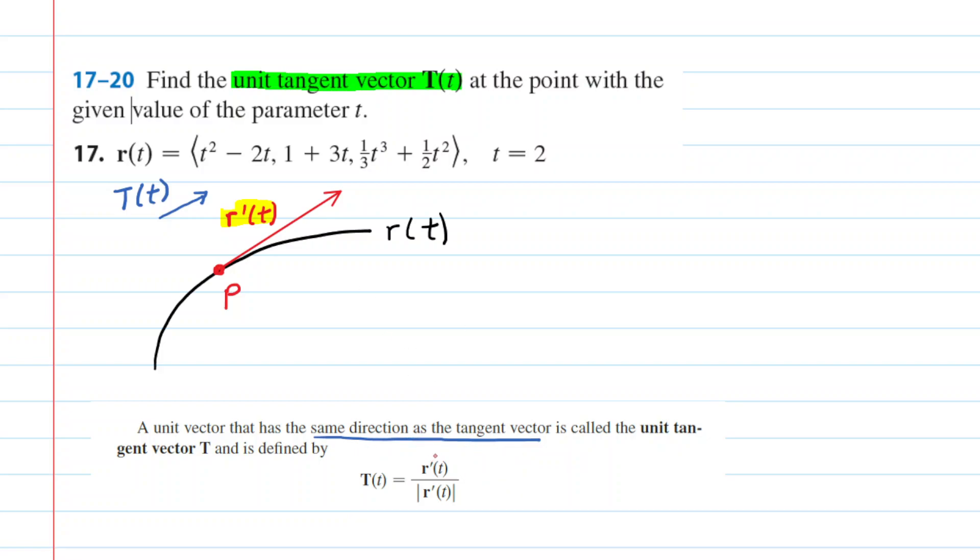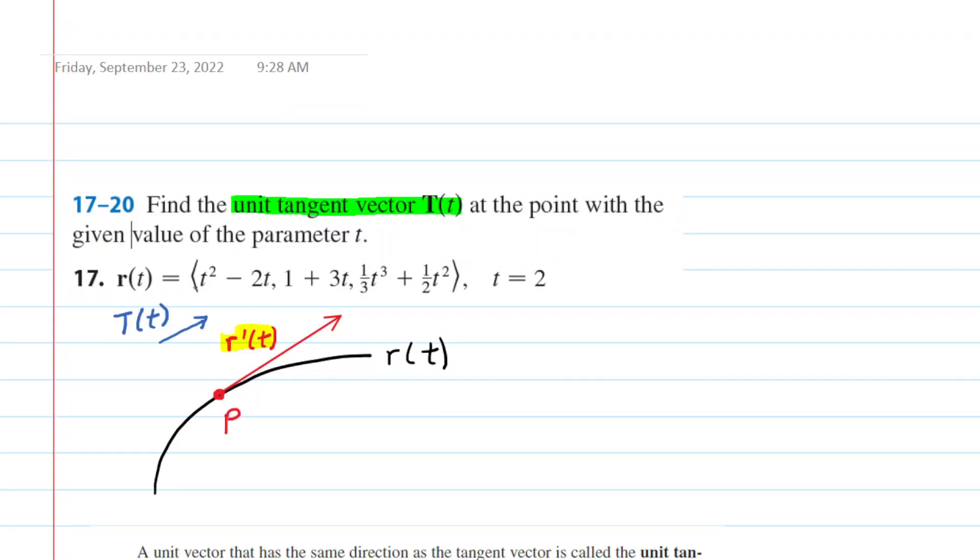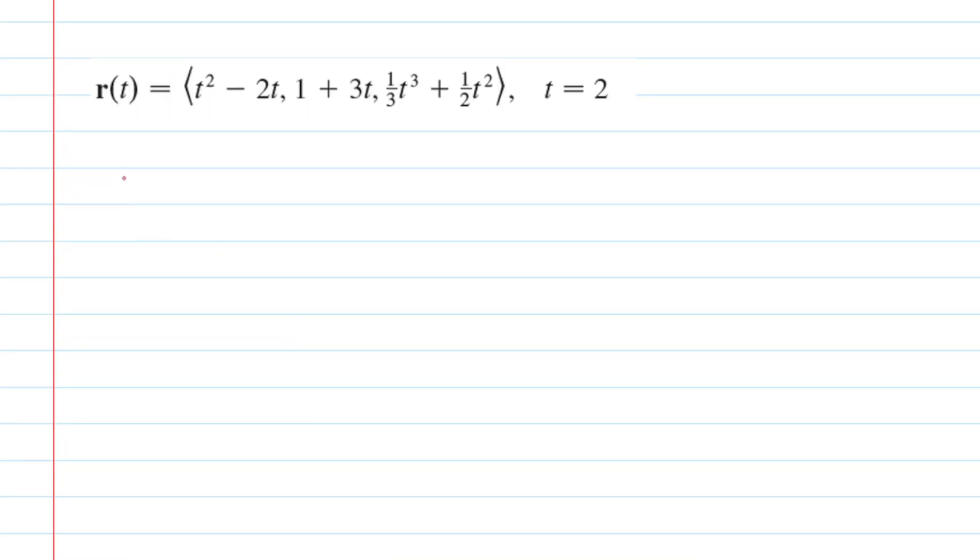But we're going to need to figure out the tangent vector first. We need, in other words, r'(t). So let's take a look at our original equation and see if we can find r'(t). Fortunately, when you find r'(t), all you really need to do is find the derivative of the x, y, and z components. And then we'll be plugging in the given t value right here.